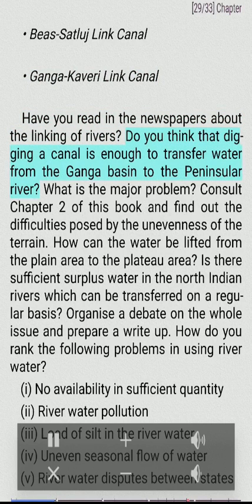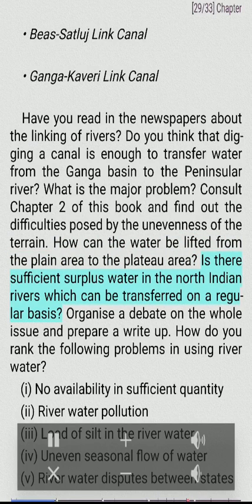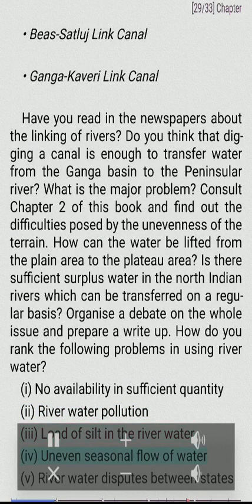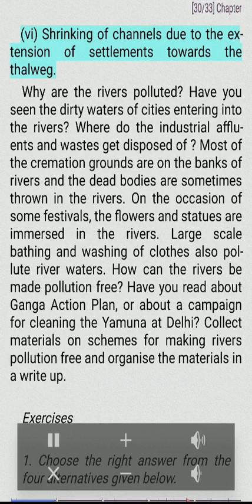Do you think that digging a canal is enough to transfer water from the Ganga basin to the peninsular rivers? What is the major problem? Consult chapter 2 and find out the difficulties posed by the unevenness of the terrain. How can water be lifted from the plain area to the plateau area? Is there sufficient surplus water in the north Indian rivers that can be transferred on a regular basis? Consider the following problems in using river water: (i) unavailability in sufficient quantity, (ii) river water pollution, (iii) load of silt in the river water, (iv) uneven seasonal flow of water, (v) river water disputes between states, (vi) shrinking of channels due to extension of settlements.